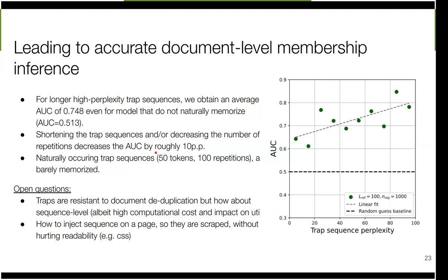This approach is not without limitations. Trap sequences are resistant to document-level deduplication, but increasingly sequence-level deduplication is being used — though it's quite computationally expensive and probably has an impact on utility. There is also the question of how you inject those sequences: they are 100 tokens and need to be repeated quite a large number of times to be well memorized by a high-compression model. Ideas include hiding them in CSS sheets, across websites and documents — you can't just put them in the text as they'll be visible and hurt readability, but we believe there are ways to make them visible to scrapers without hurting utility.